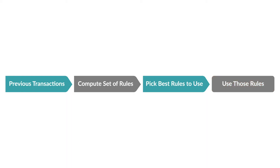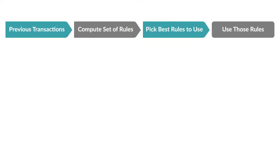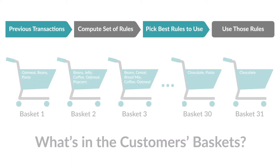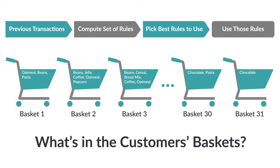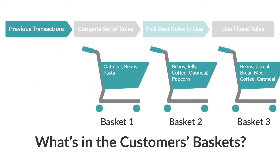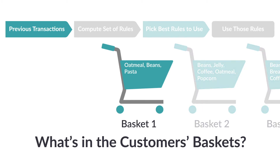Imagine that you're in the online gourmet grocery business. Your list of previous transactions could look like this. Let's take a look at our transactions and look at who is buying what. We see that customer one has oatmeal, beans, and pasta in the cart.